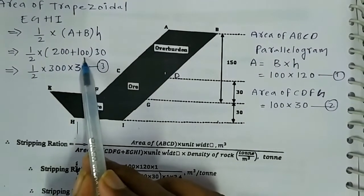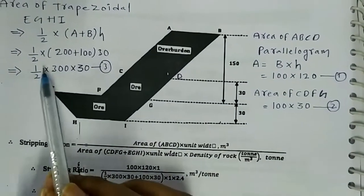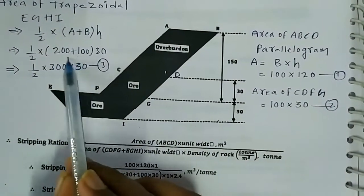Height is 30. The height is nothing but 30 meters height, 150 minus 120 is 30. This is the third equation.